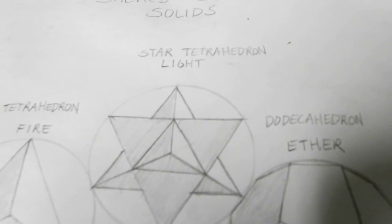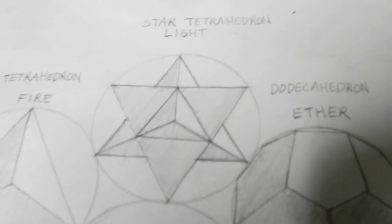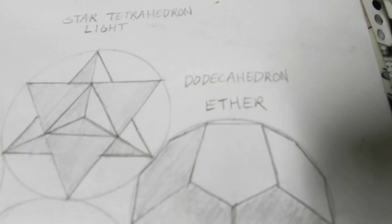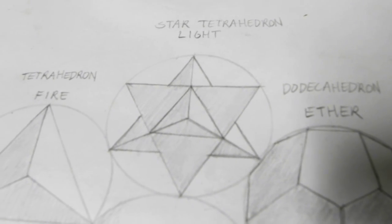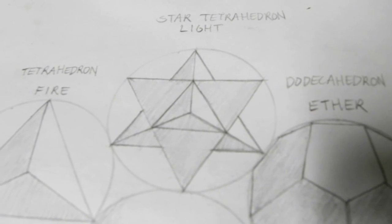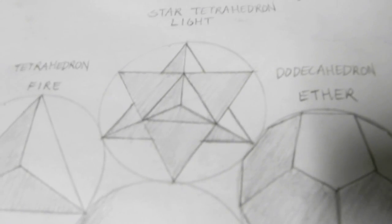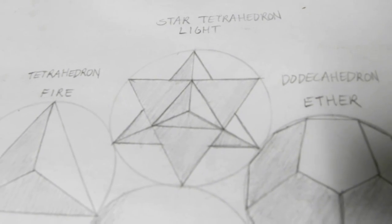If you check out each one, I'm going to start with the star tetrahedron. The star tetrahedron represents light and it's basically just two tetrahedrons overlapping each other. This is probably one of the newer of the solids that has just been discovered or rediscovered and is used in metaphysical work now.